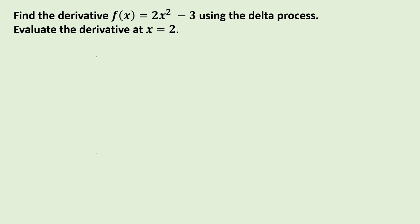Let us identify the derivative of 2x squared minus 3 using the delta process. We will be guided by the four-step process, and after that, we are going to evaluate the derivative at x is equal to 2.